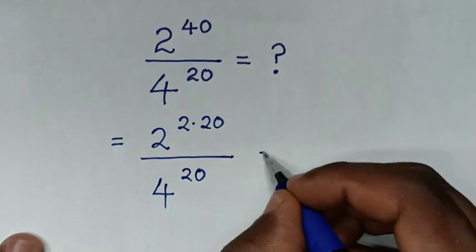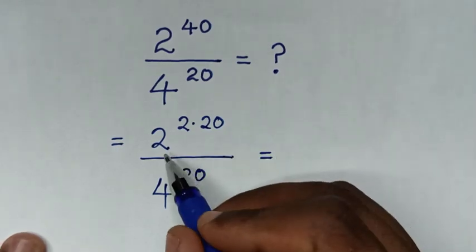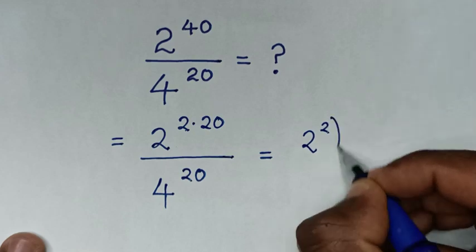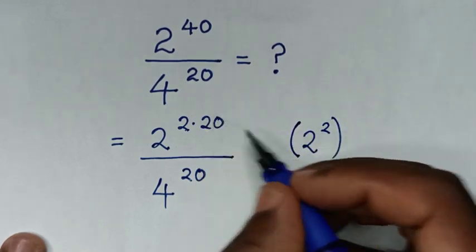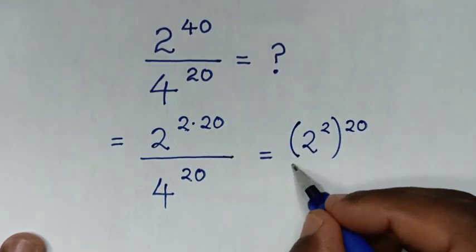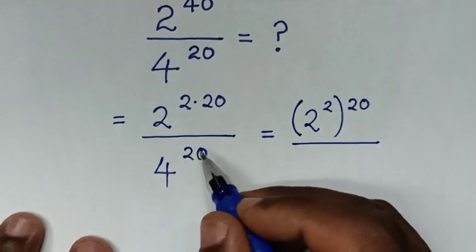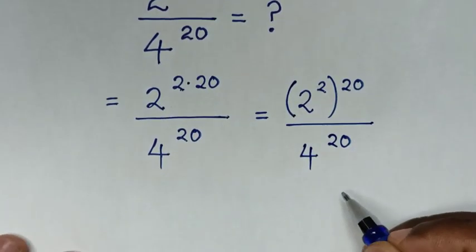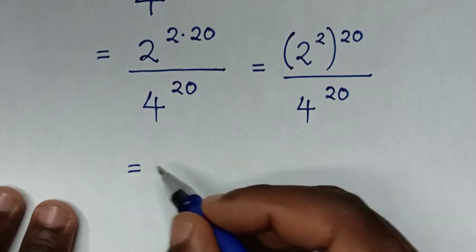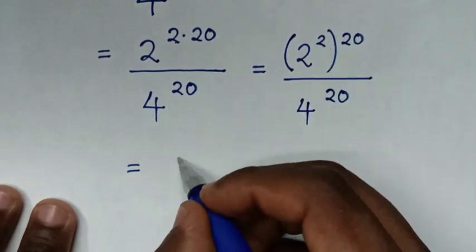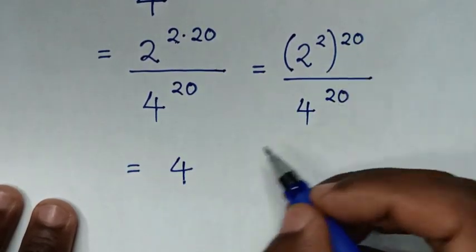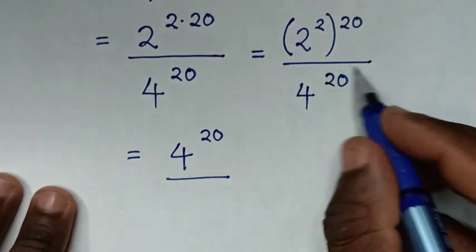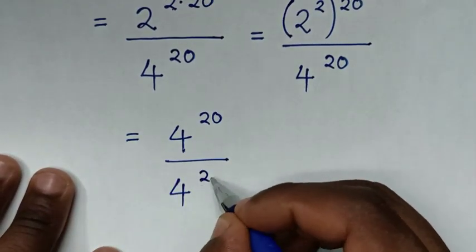Then it will be equal to: we make this 2 power of 2 inside the bracket, then power of 20 outside the bracket, over this exponent 4 power of 20. Then it will be equal to 2 power of 2, which is 4, then power of 20, over this exponent 4 power of 20.